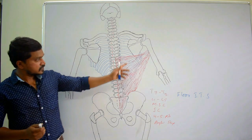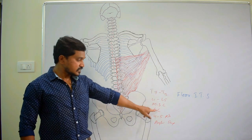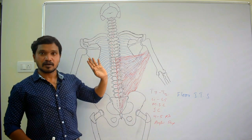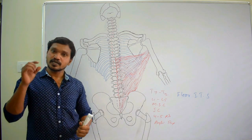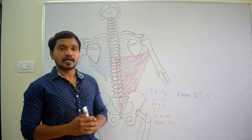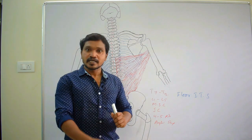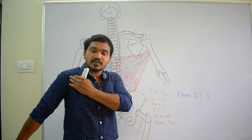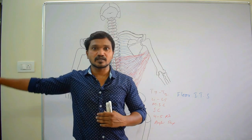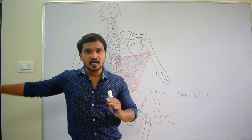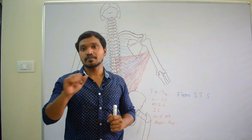So latissimus dorsi: origin from spinous process of T7 to T12, L1 to L5, median sacral crest, iliac crest, lower 4 to 5 ribs, and inferior angle of scapula. Insertion: floor of intertubercular sulcus, in between teres major and pectoralis major. Nerve supply: thoracodorsal nerve, a branch from the posterior cord of brachial plexus. Actions: extension of shoulder joint along with medial rotation, adduction of shoulder joint along with pectoralis major. It also helps in elevation of trunk during climbing - so it is also called the climbing muscle.